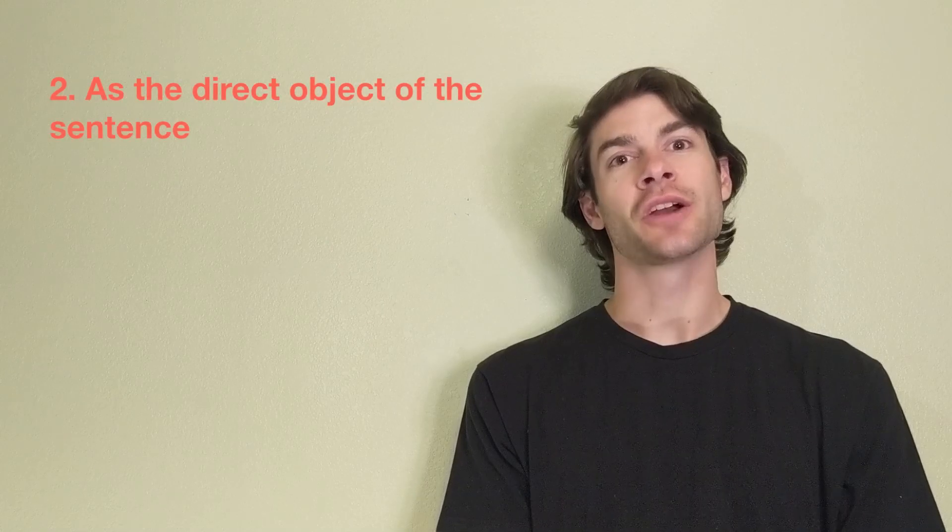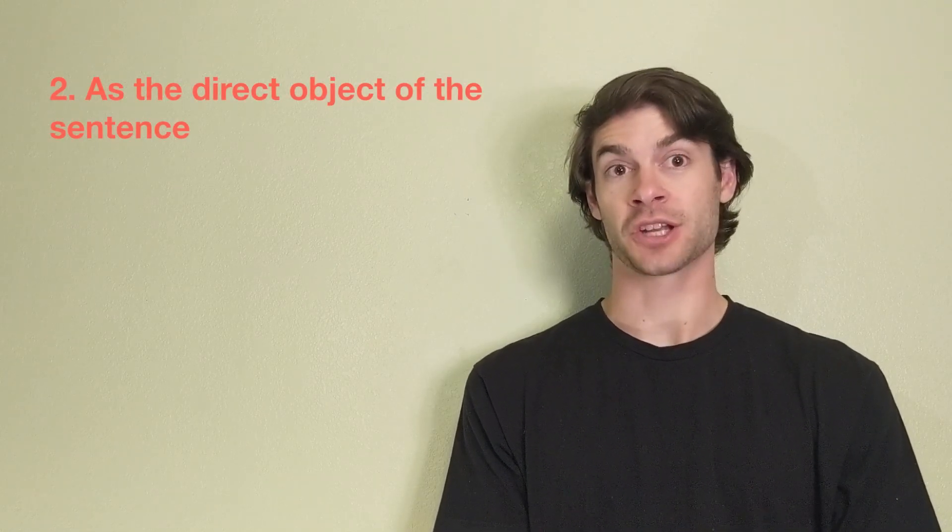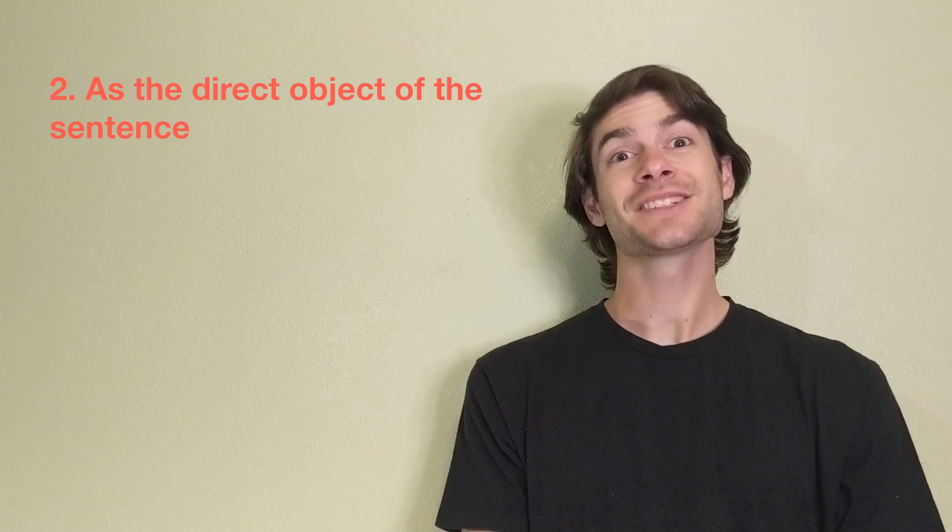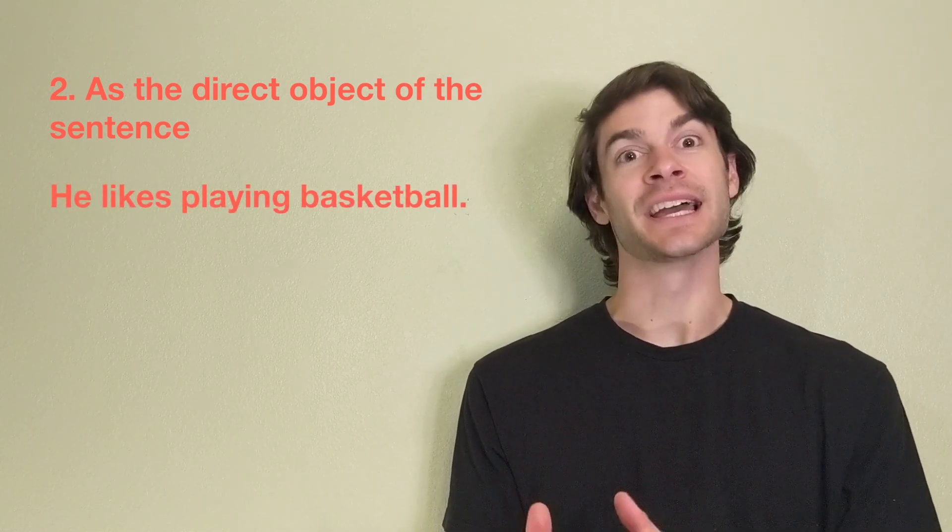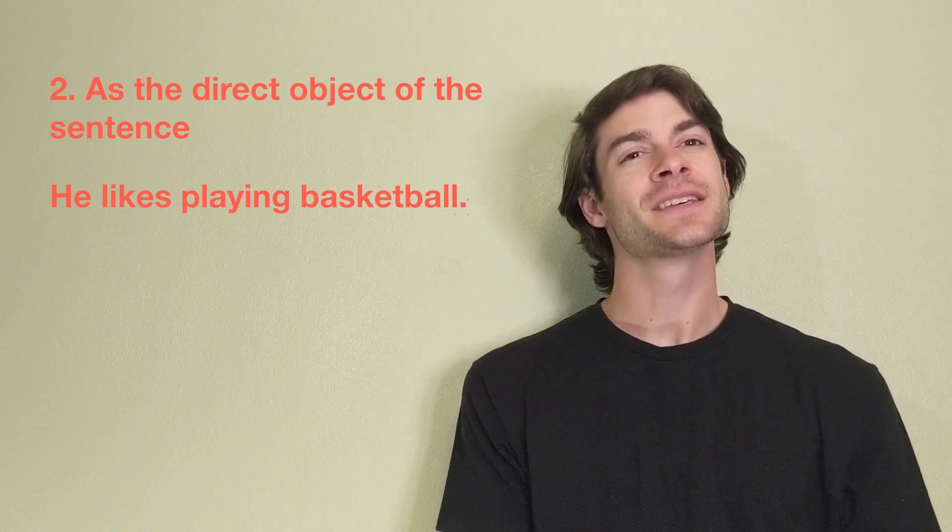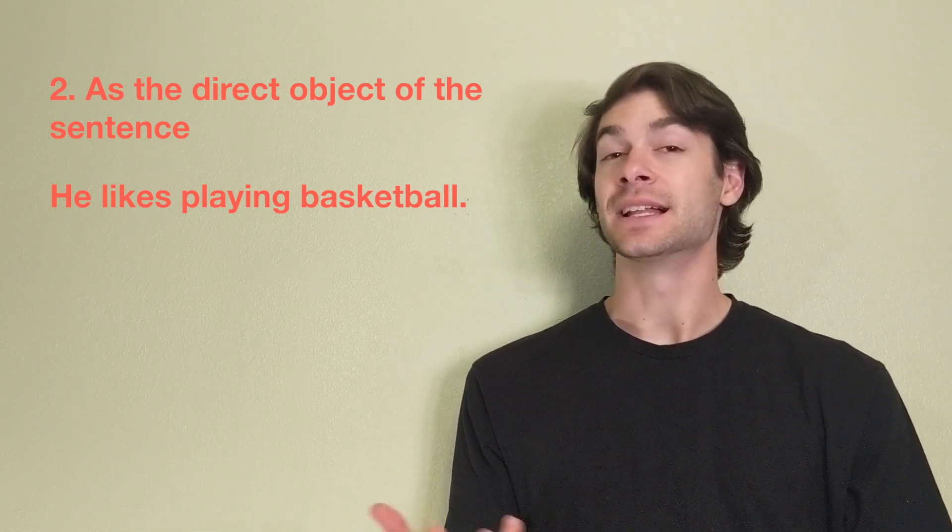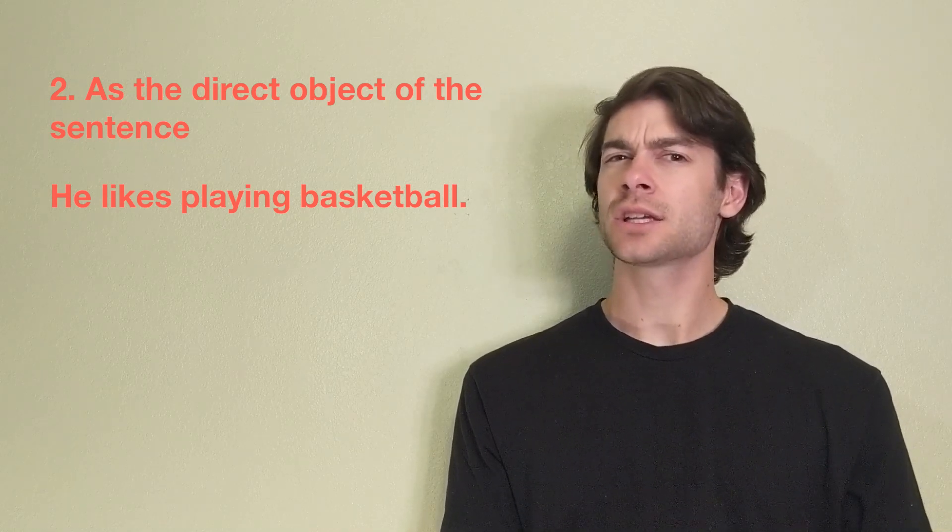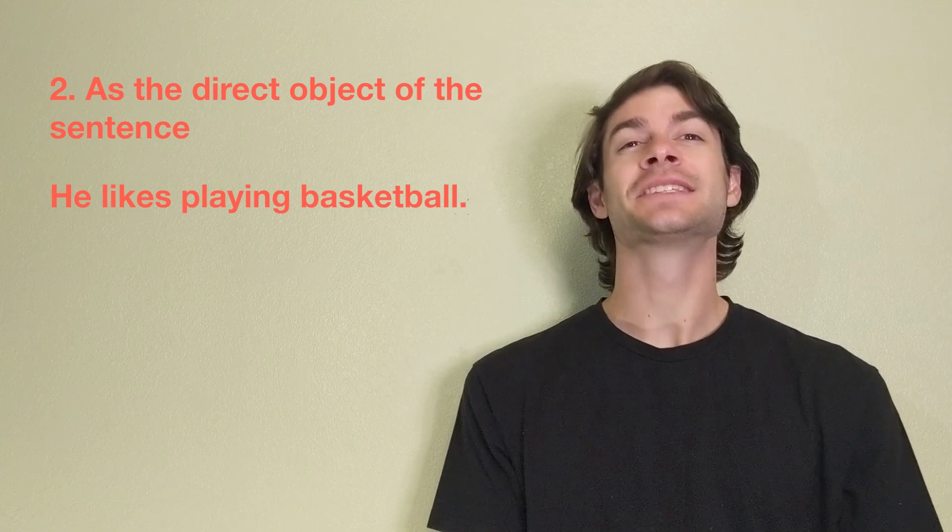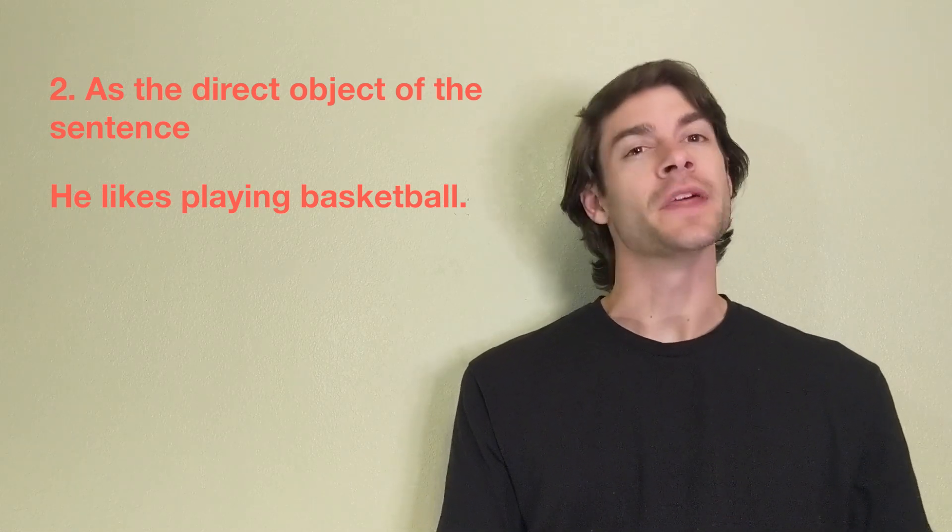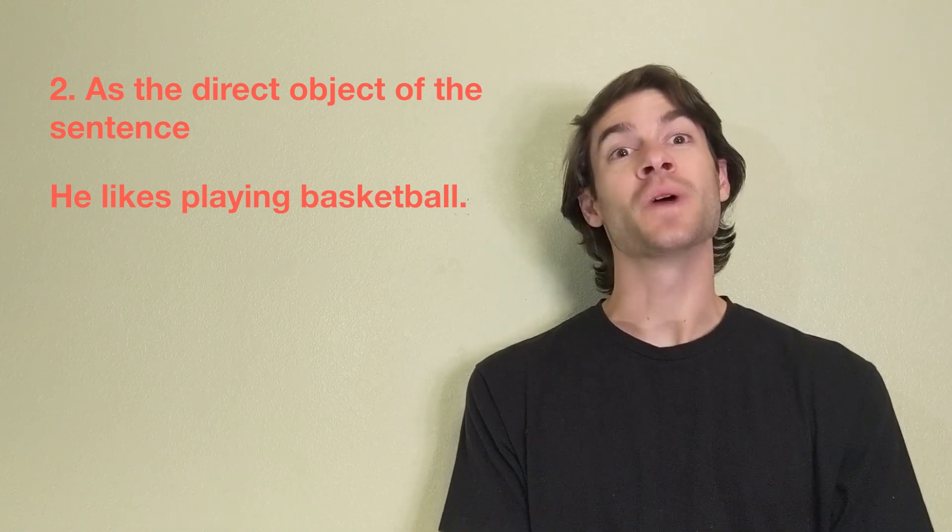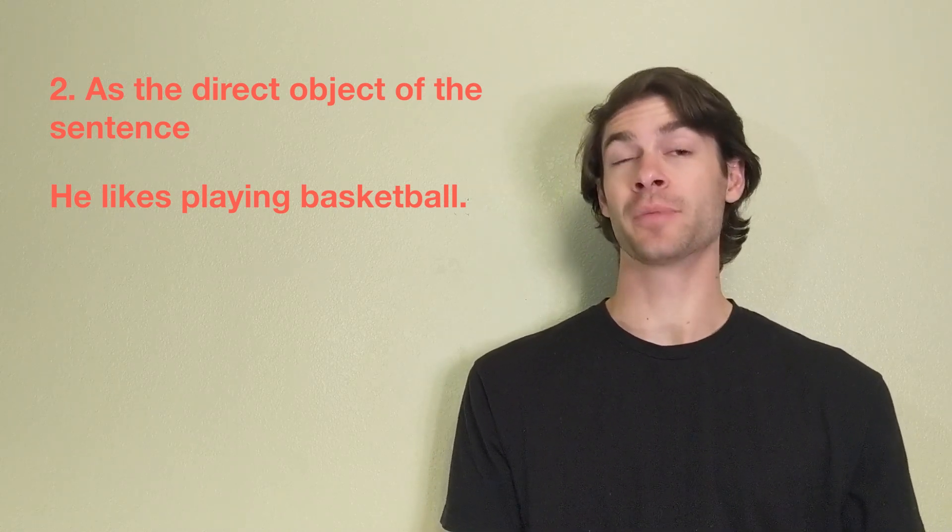To use a gerund as the direct object of a verb, our second form, let's look at the sentence, he likes playing basketball. In this sentence, our subject, he likes, we can ask, what does he like? He likes playing. Therefore, our gerund playing is the direct object of the verb like.